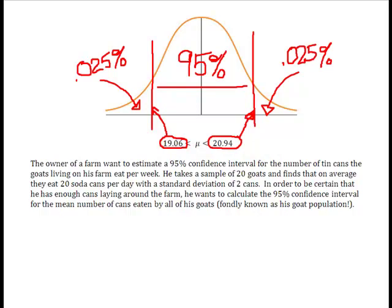Alright, so now that I've done that, what I've come up with, I've come up with the 95% confidence interval. It's between 19.06 and 20.94. That means there is a 95% probability that the true actual average number of cans eaten by the entire goat population per day is between 19.06 and 20.94.